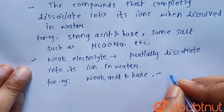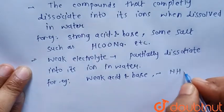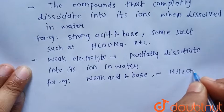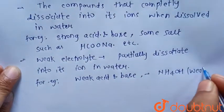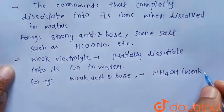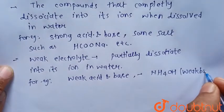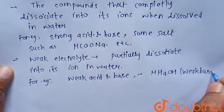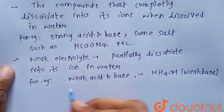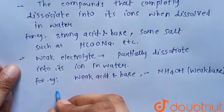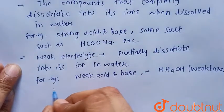For example, ammonium hydroxide (NH4OH) is a weak base, so it is a weak electrolyte, not a strong electrolyte, because it only partially dissociates in water.